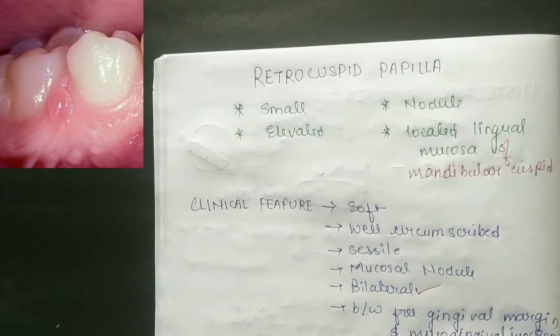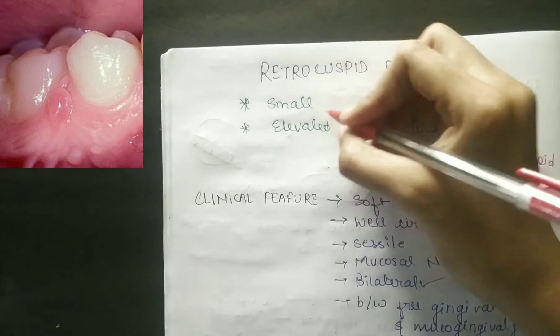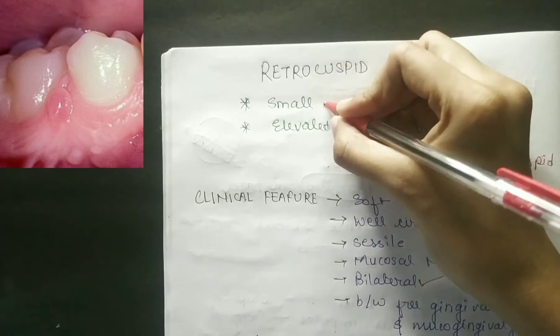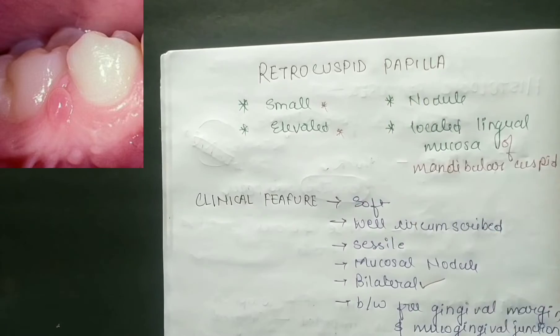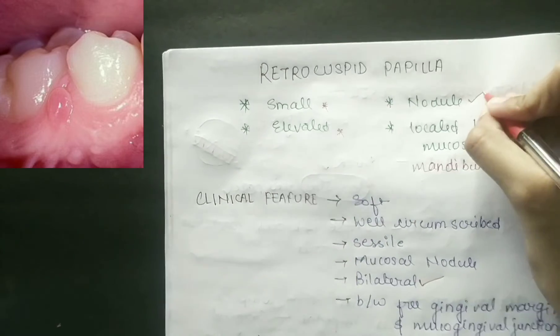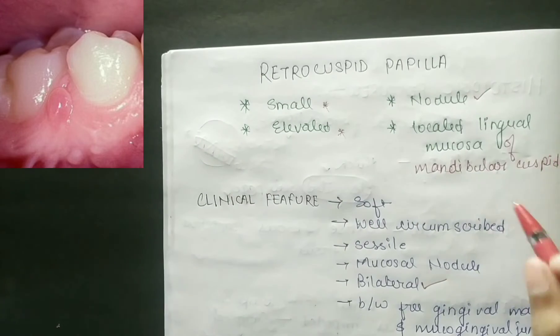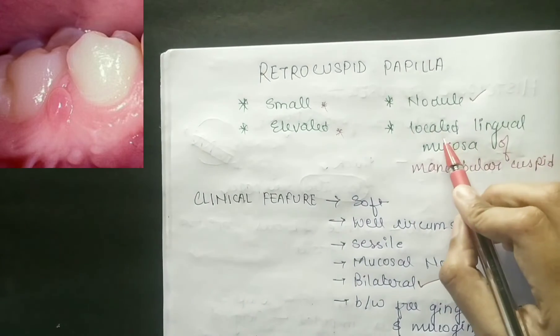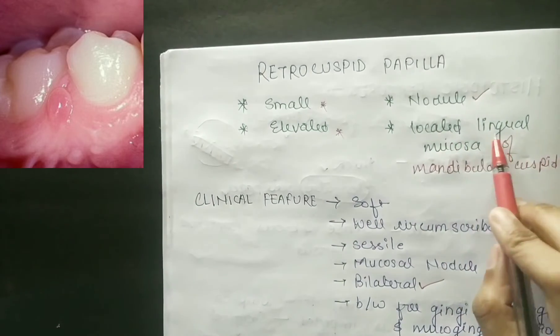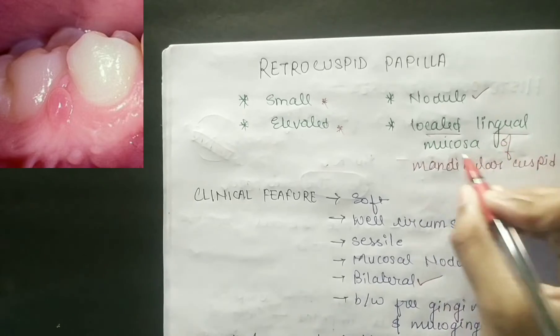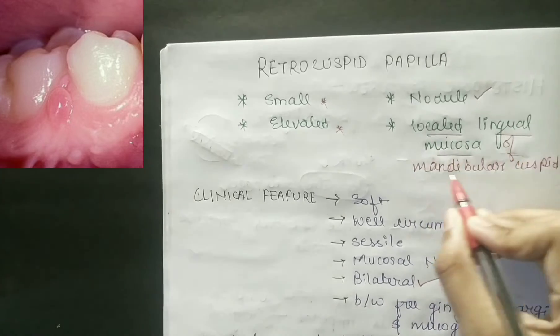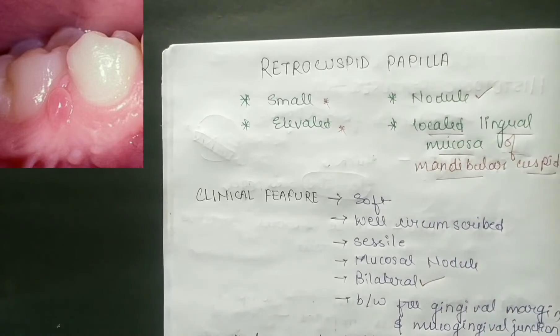Looking at retrocuspid papilla: you can see small elevated nodules present. It is a localized finding on the lingual mucosa of the mandibular cuspid area.